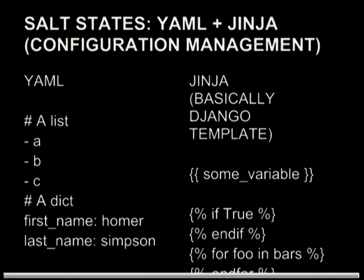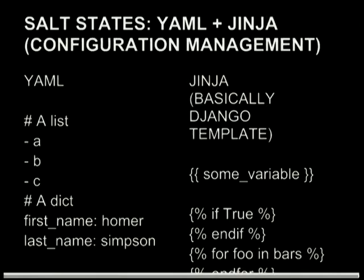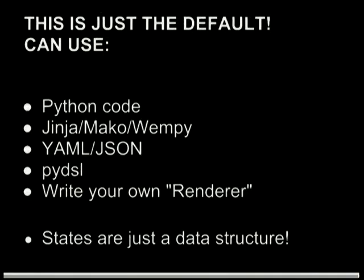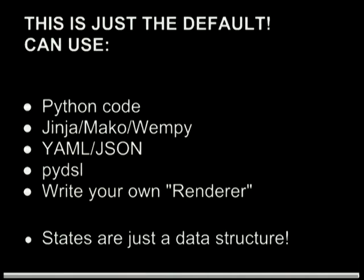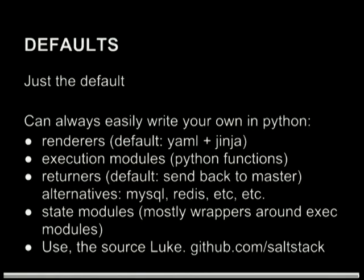Configuration management in Salt — they're called Salt states. They're really simple. By default you write them in YAML and template them with Jinja. If you don't know YAML or Jinja, it's really really simple — here's a YAML list, a YAML dictionary, and Jinja is basically the same as Django templating: an if statement, a for loop, and getting a variable out. You don't have to use YAML or Jinja — you can use Python code, Mako, Wempy, JSON, or their own domain-specific language, and you can write your own renderer. States are just actually a data structure, and it's really easy to write your own things in Python.